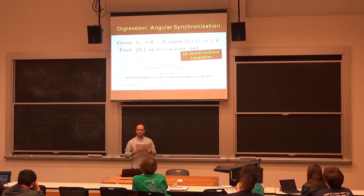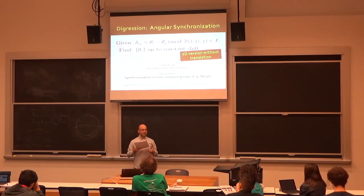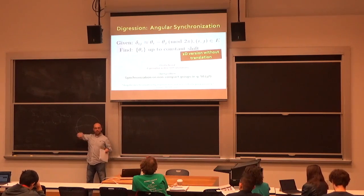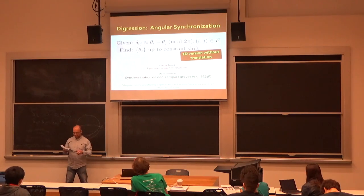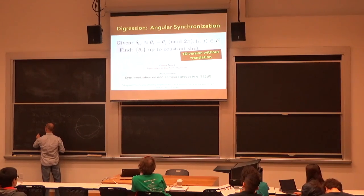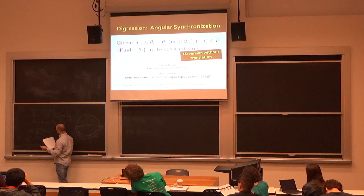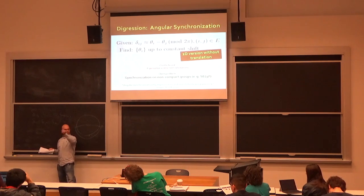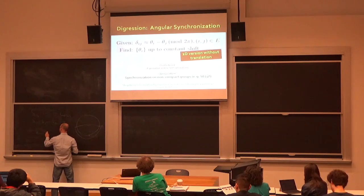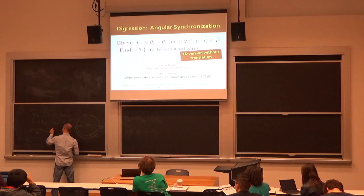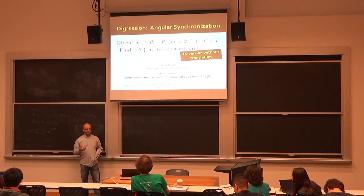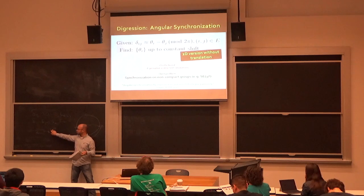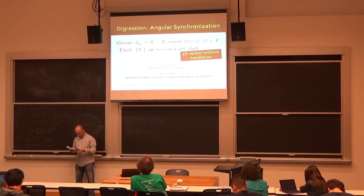To get rid of the 2π ambiguity, rather than working with unknowns that are thetas, we're going to use complex numbers. Define z_i = e^{iθ_i}. The index i in the exponent is the imaginary unit — if it's on top of an e, it's complex. This variable lives on the unit circle in the complex plane.